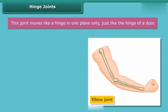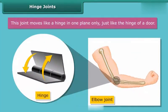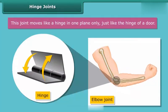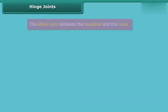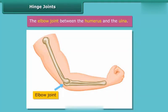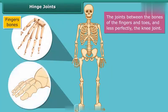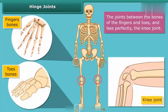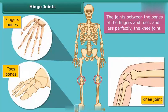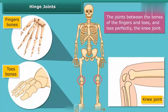Hinge joints move like a hinge, in one plane only — just like the hinge of a door. The elbow joint between the humerus and the ulna, the joints between the bones of the fingers and toes, and the knee joint are hinge joints. Hinge joints usually give sufficient power because there is less danger of twisting at the joint.